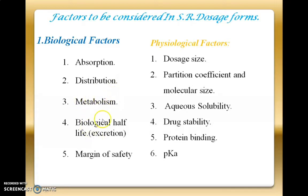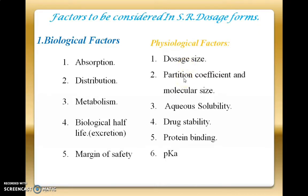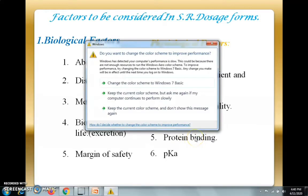The biological half-life of the drug should be between two to five hours. Margin of safety is very important because one disadvantage of sustained release is dose dumping, so the therapeutic window must be large enough to provide a good margin of safety. In physiological factors, dose size plays an important role — the dose must be small since other ingredients are added. The drug must have a sufficiently good partition coefficient for passive diffusion absorption, small molecular size, sufficient aqueous solubility, stability throughout the GIT, and protein binding and pKa values should both be optimum.